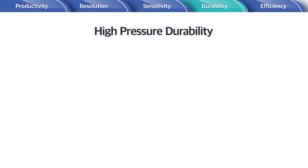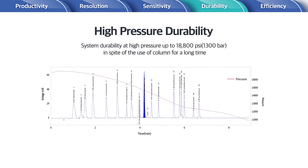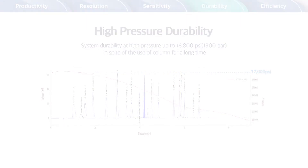High pressure durability. The longer you use UHPLC columns, the higher back pressure the system has to endure. Crozen UHPLC endures real ultra-high pressure, up to 18,800 psi, which utilizes the lifetime of UHPLC columns as long as possible.